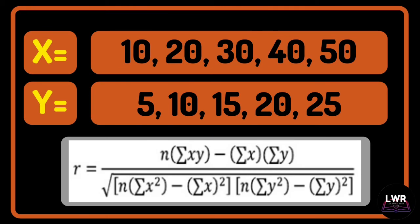The x variables are 10, 20, 30, 40, and 50, while the y variables are 5, 10, 15, 20, and 25.